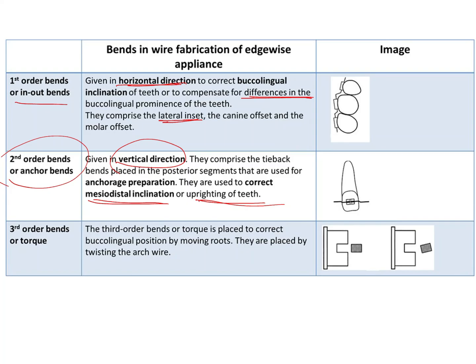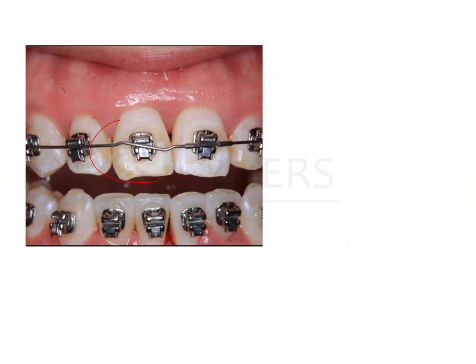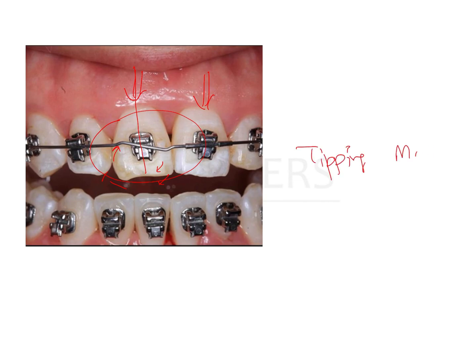Looking at what these bends look like: here you can see that this central incisor's mesodistal inclination looks correct, but the other central incisor could do with a little more correction or uprighting. The inclination of that tooth could be uprighted a bit. This mesodistal uprighting can be brought about by giving a vertical bend which is going to push the tooth down mesially and up distally, correcting the inclination. This is essentially mesodistal tipping or uprighting of the tooth.